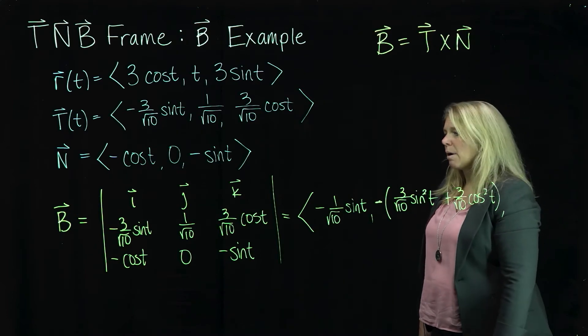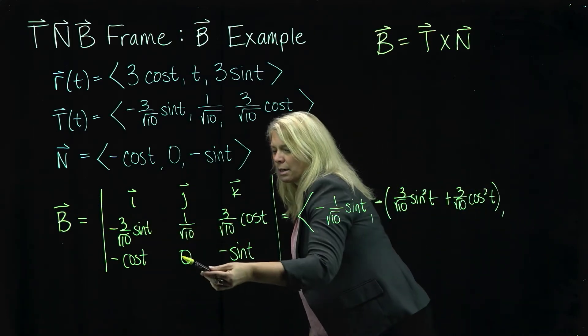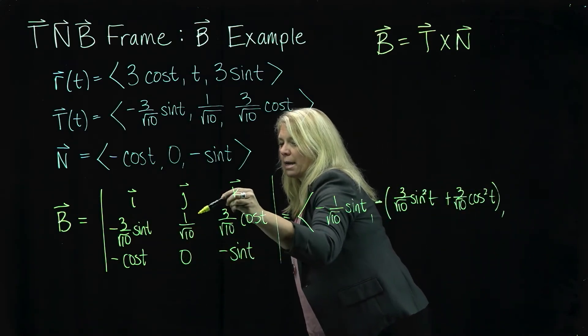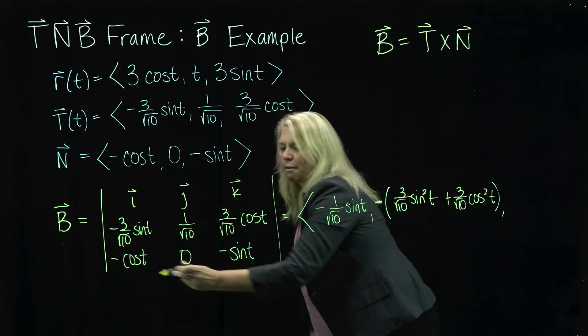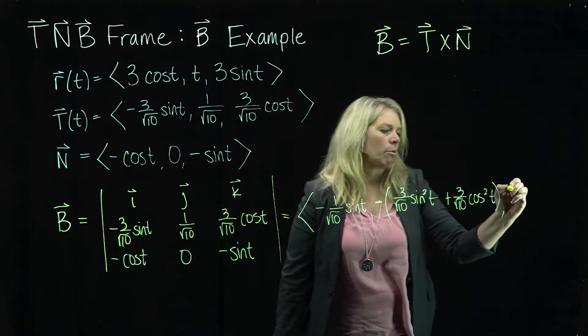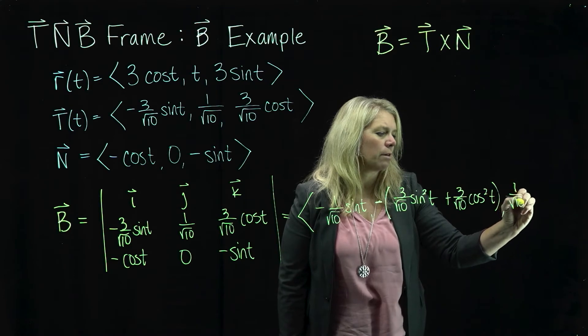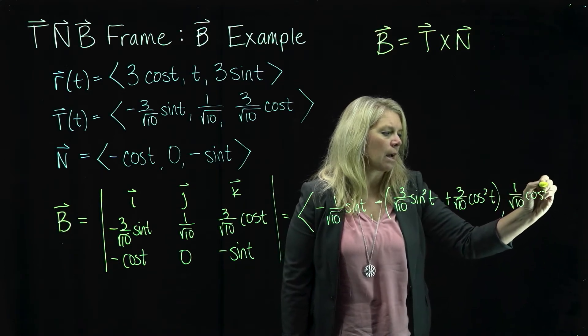And then in my K component, I will have this product, which is zero minus this product. So again, I'll have minus a negative. So that will be positive 1 over square root 10 cosine T.